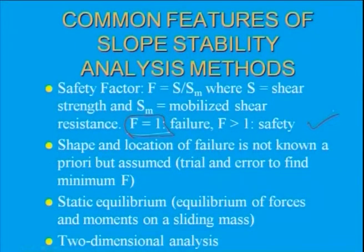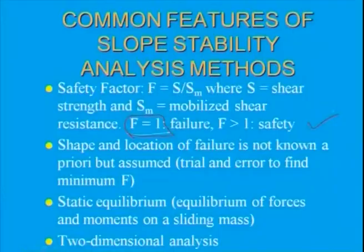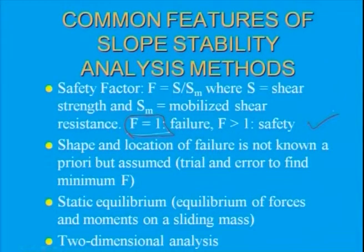The shape and location of the failure surface is not known a priori but is assumed. Generally, we do not know the shape and location of the failure surface; it is determined by trial and error.